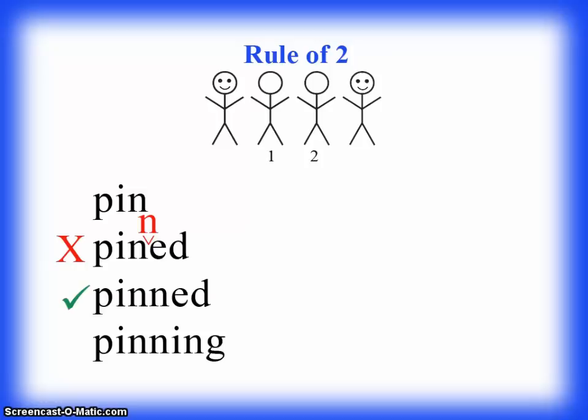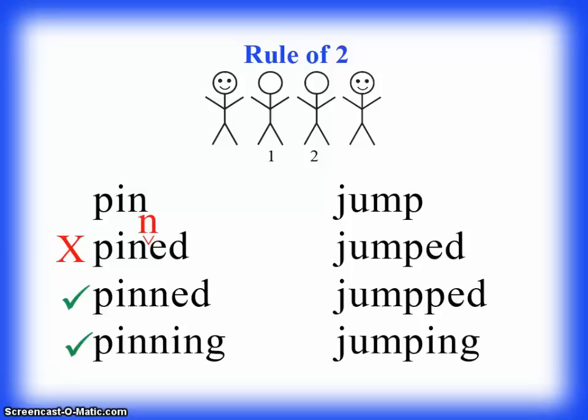Now look at the next word: "pinning." Here we have our plain word "pin" again. But before we added the ING, we put another N there, so that this I is far enough away from the suffix I that it will not make it long. So that is also correct.